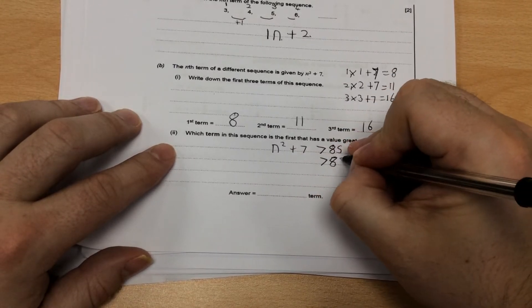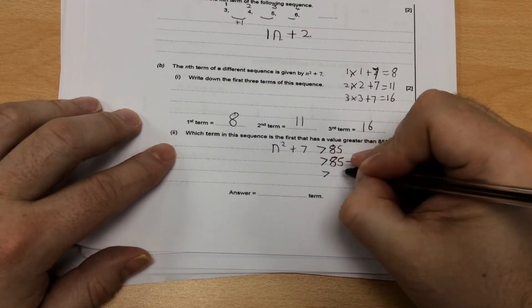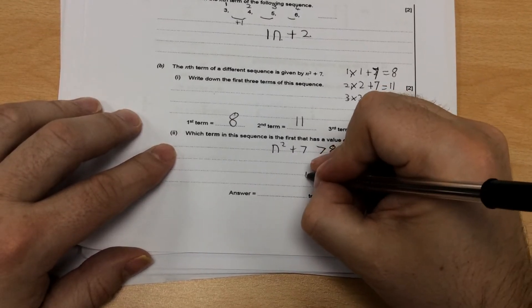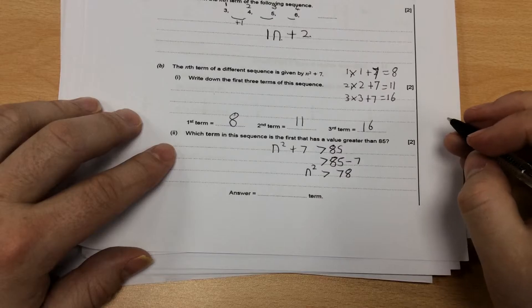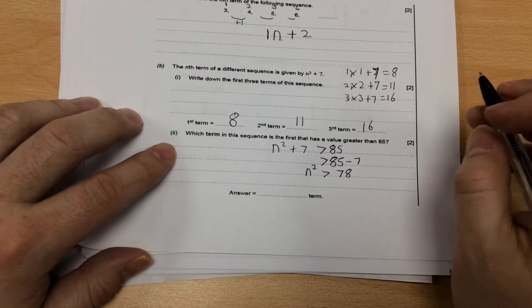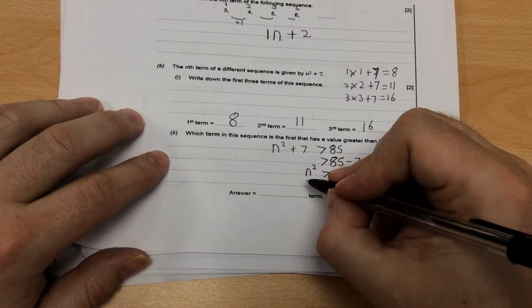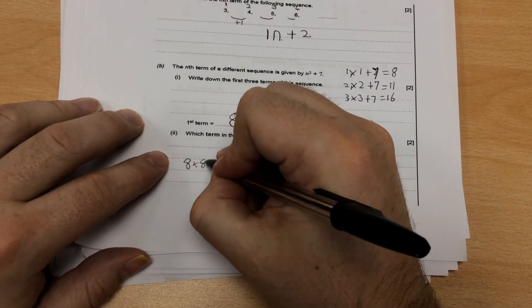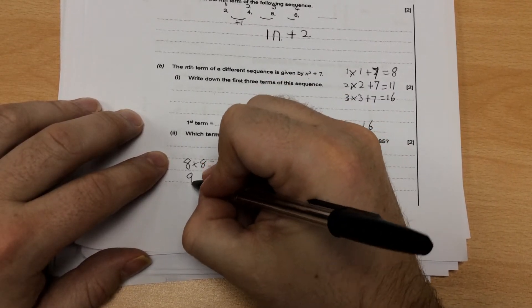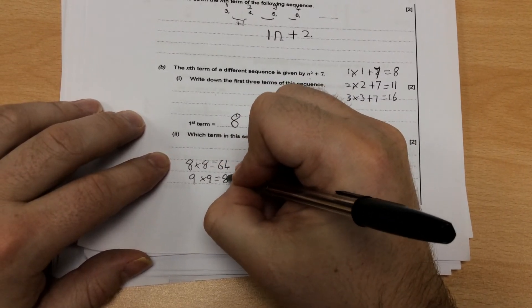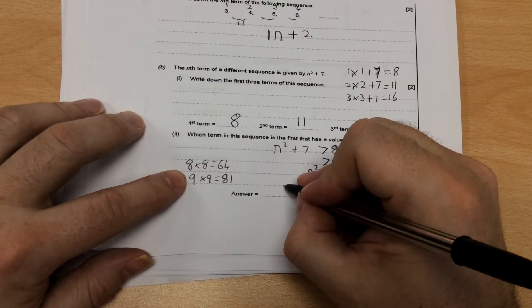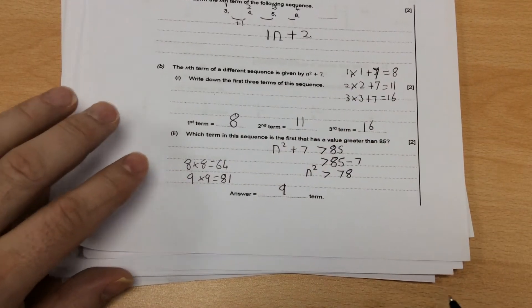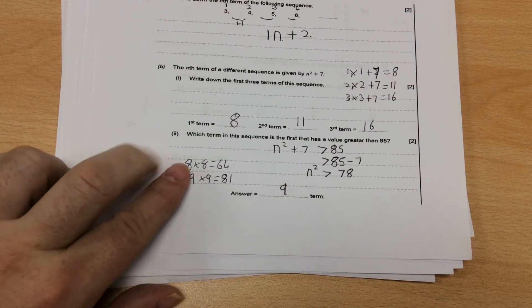The opposite of add seven is take away seven. So, 85 take away seven is 78. So, n squared is 78. So, what is the first square number bigger than 78? Eight times eight is 64. That's not bigger than 78. Nine times nine is 81. That's bigger than 78. So, the first number that's bigger than 78 is nine.